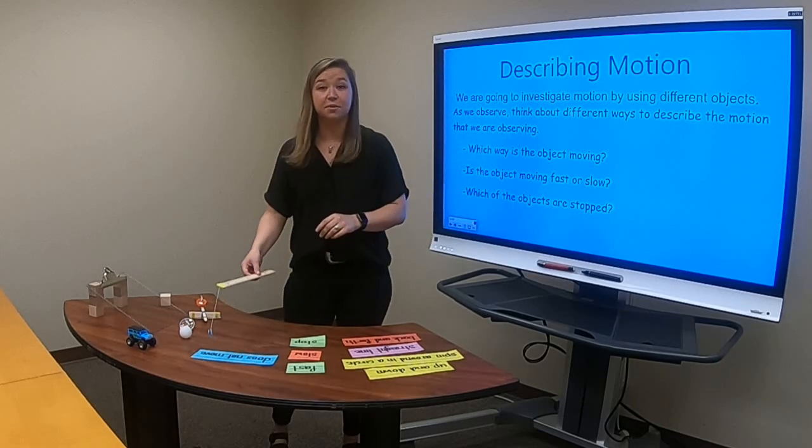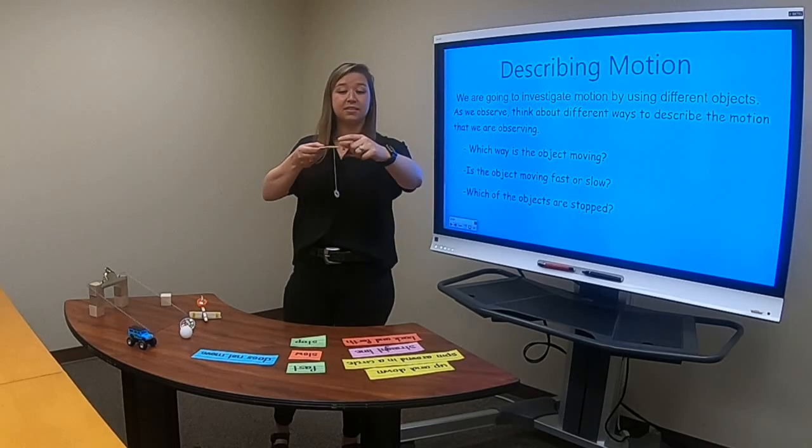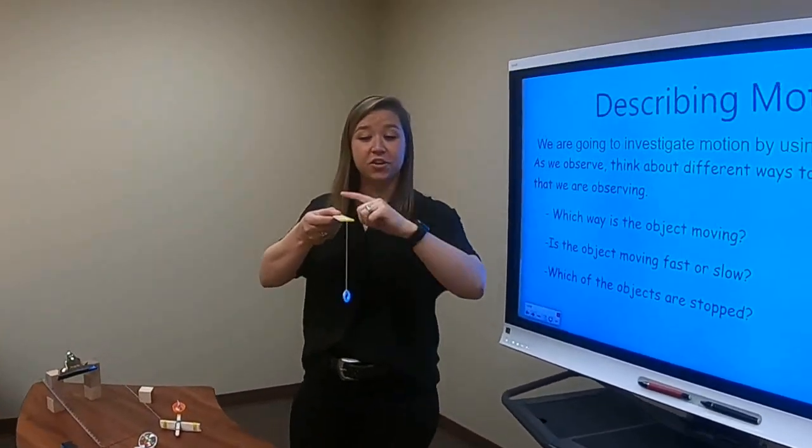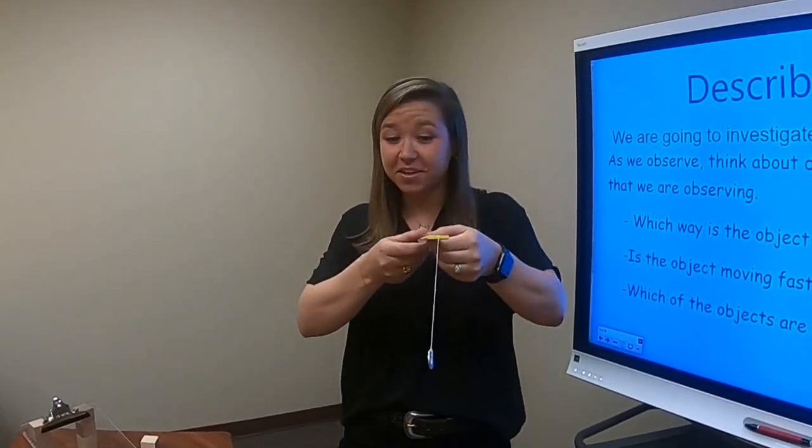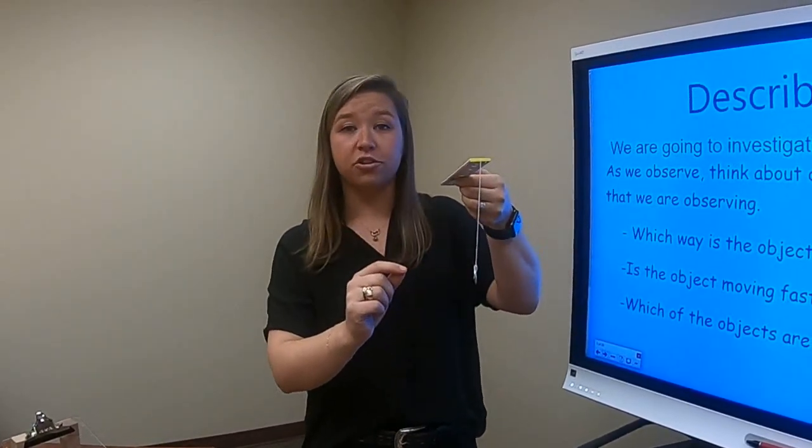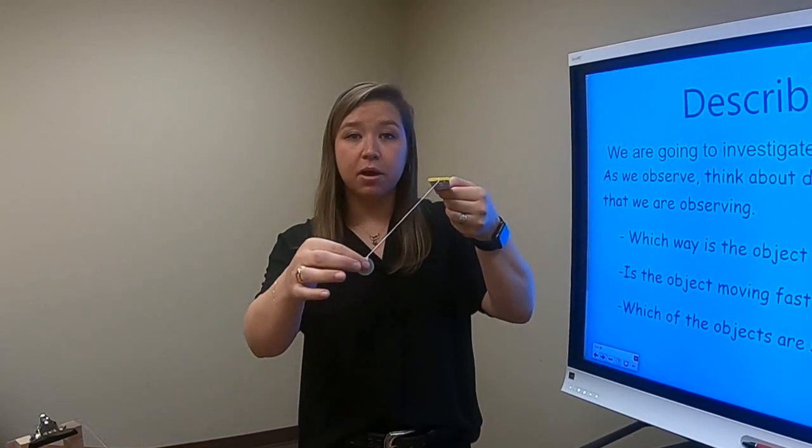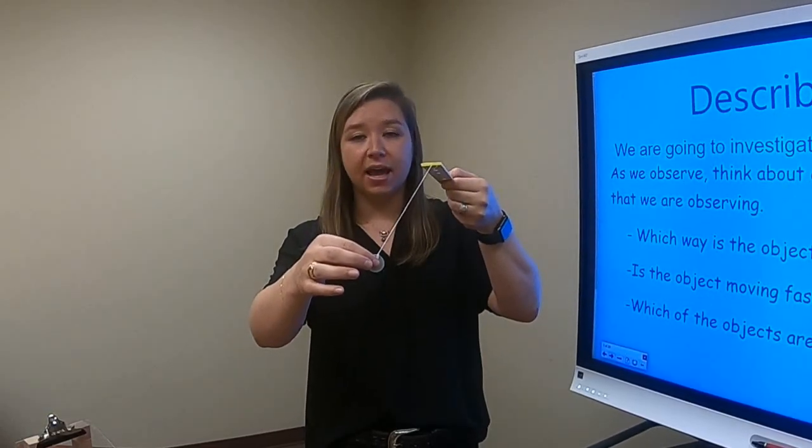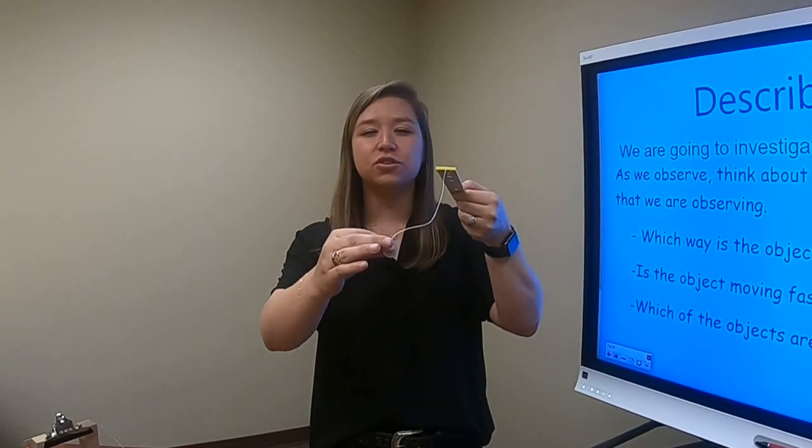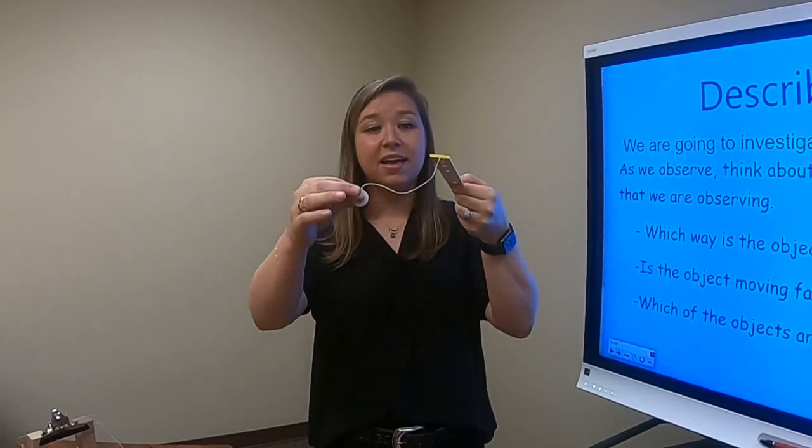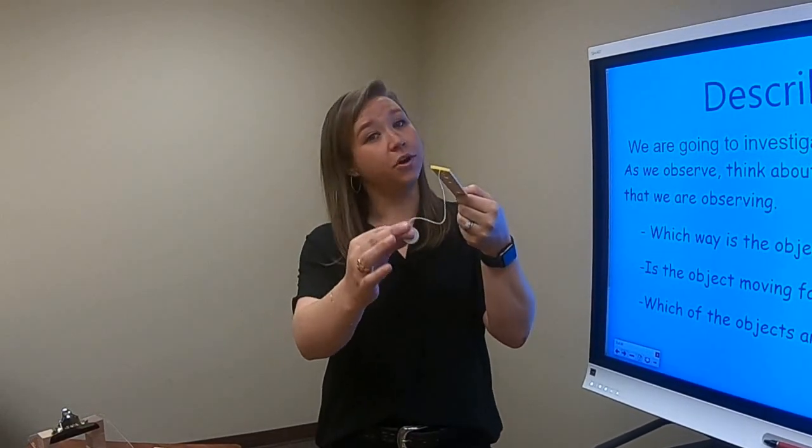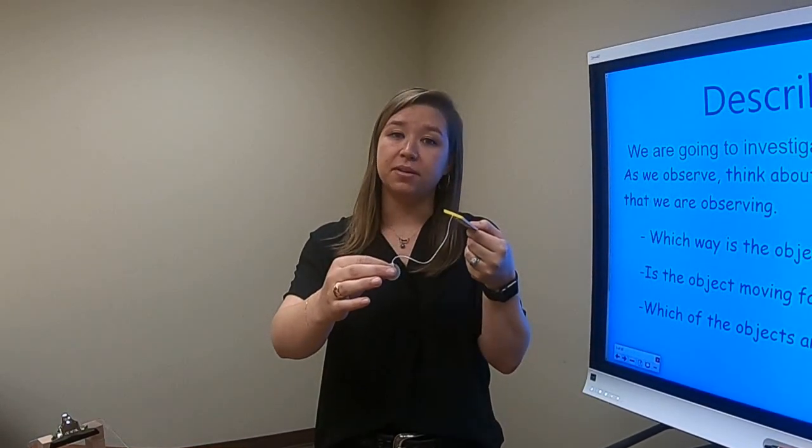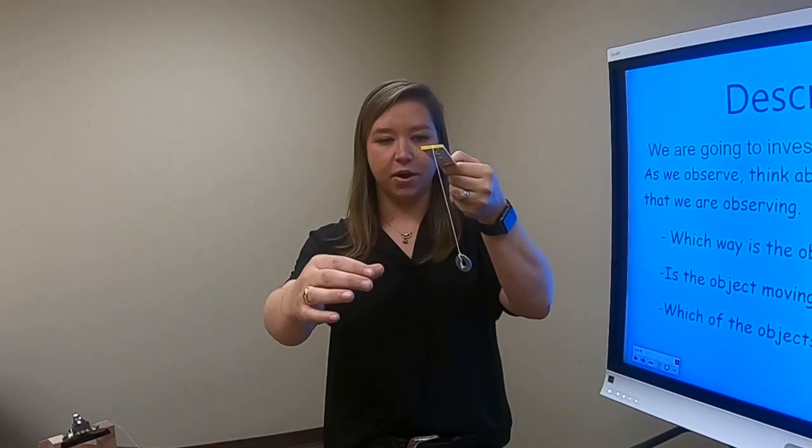Our first object is a pendulum. A pendulum is a string on a fixed point. So here we have a ruler, I made this at home, with a string and a washer. So I'm going to pull back my washer, not very far, but as you watch I want you to see if you can describe the type of motion that my pendulum is making. Is it going around in a circle? Is it going up and down? I want you to tell me. Are you ready? Let's go.